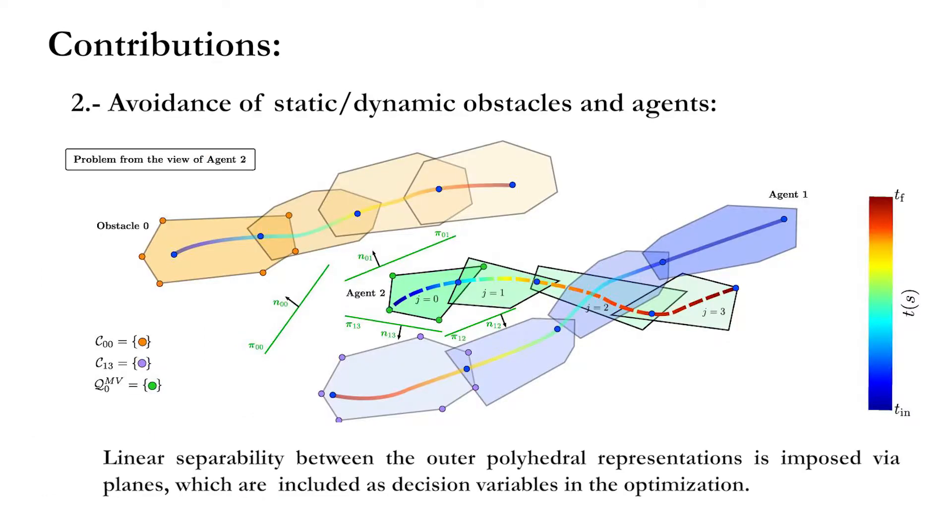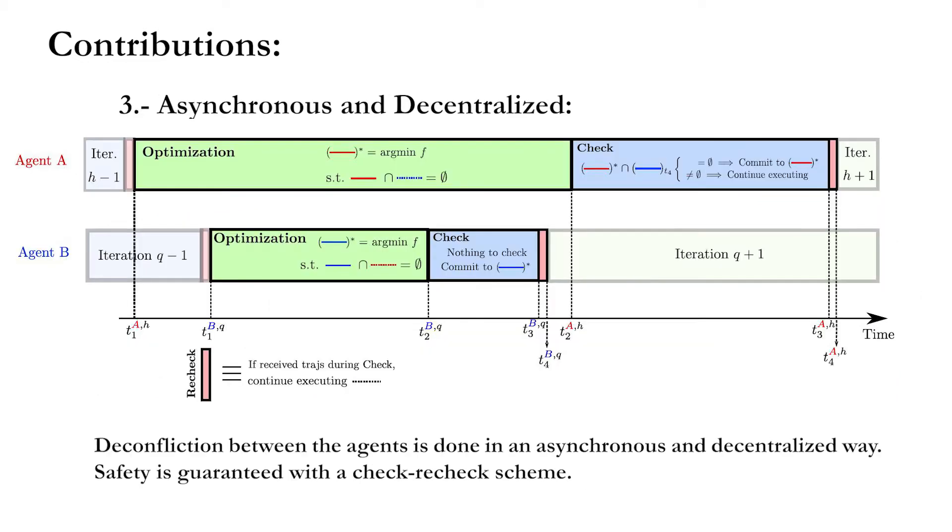Secondly, Mater is able to perform avoidance of static or dynamic agents and obstacles by imposing linear separability via planes. These planes are included as decision variables in the optimization.